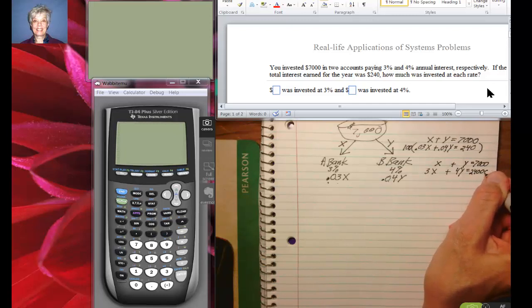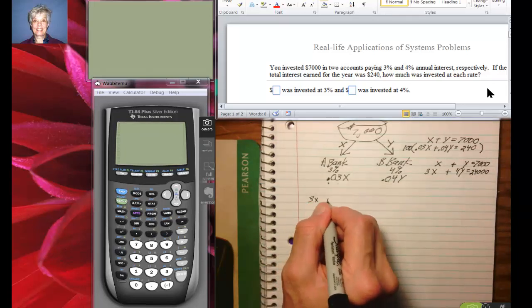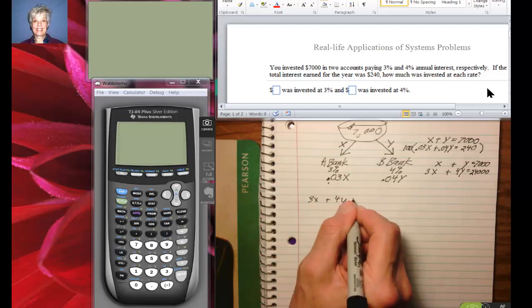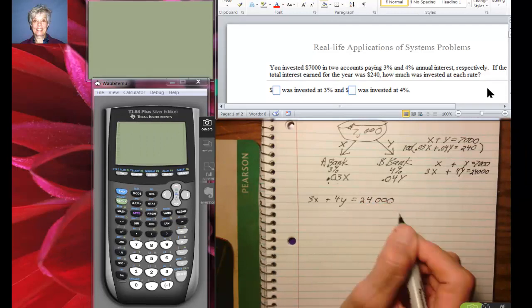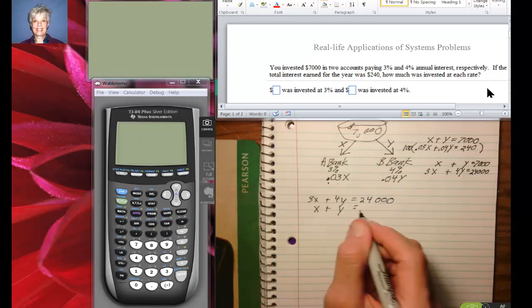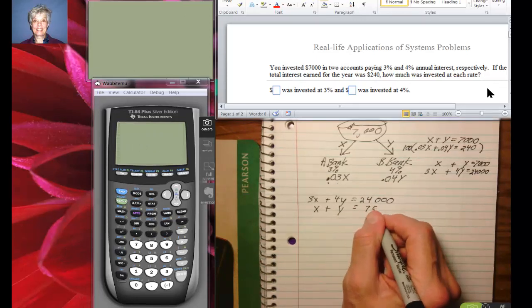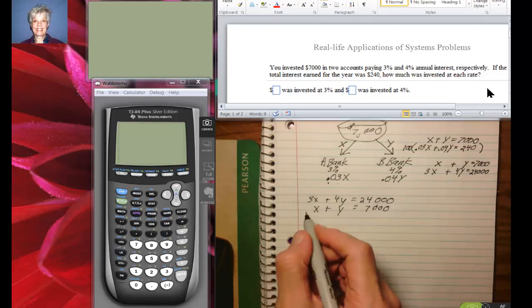So now let's write this more neatly down here. We're going to have 3X plus 4Y equals 24,000, and X plus Y equals 7,000. What do you want to do here? Why don't we use elimination and multiply the entire second equation by negative 3 so we can eliminate the X's first.